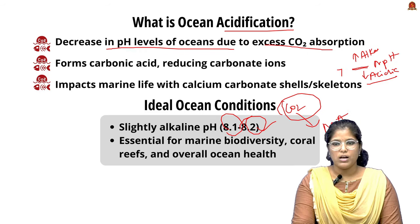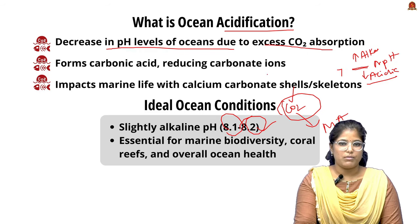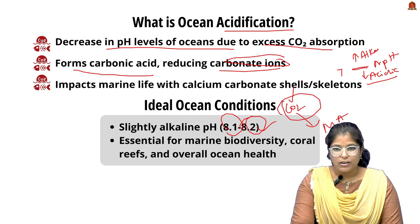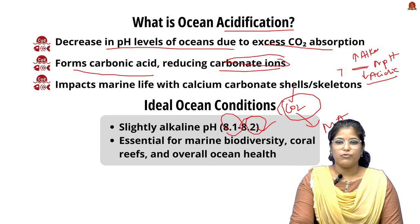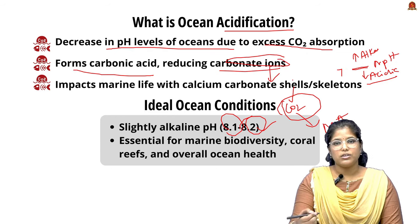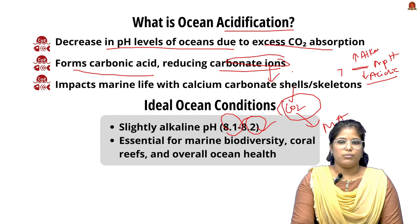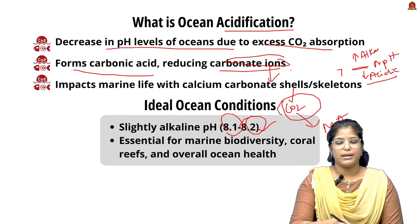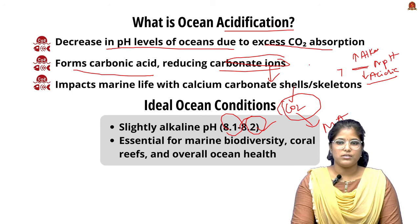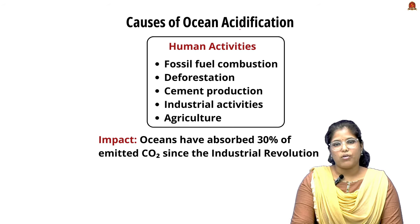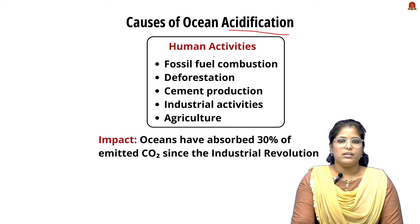Excess CO2 leads to the formation of carbonic acid and reduces carbonate ions. These carbonate ions are essential for marine organisms that have a shell or skeleton. When these ions decline due to ocean acidification, it negatively impacts marine life.